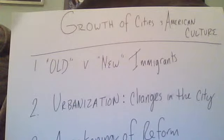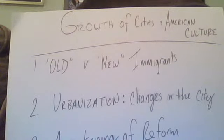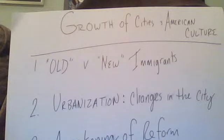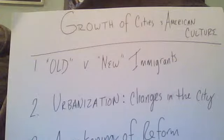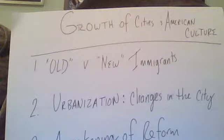During the latter half of the 19th century, we see a population boom in the United States where the population almost increases more than threefold. A significant portion of this growth was fueled by the arrival of about 16 million immigrants. We'll see another 9 million immigrants arrive during the first part of the 20th century. So what's causing this growth of immigration?